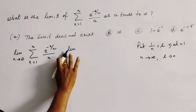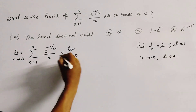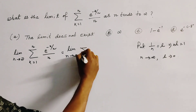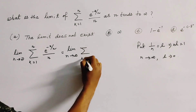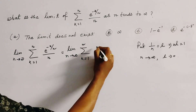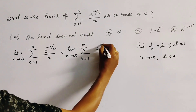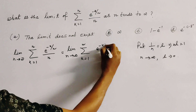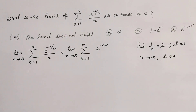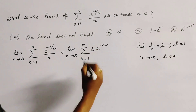We are going to take the limit as n tends to infinity. The sum from k equal to 1 to n of e to the power minus k times h, because 1 by n is equal to h, and 1 by n equals h.